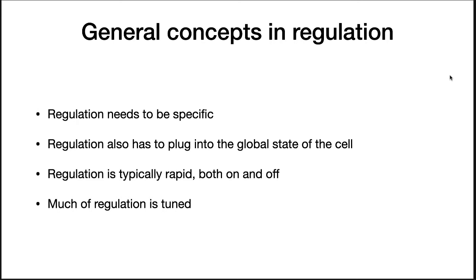In bacteria and archaea, regulation is typically rapid, both in turning on genes and in turning them off. Organisms that exist as single cells must react quickly to the environment and take advantage of what's there before other competitors. Finally, most gene regulation is tuned.